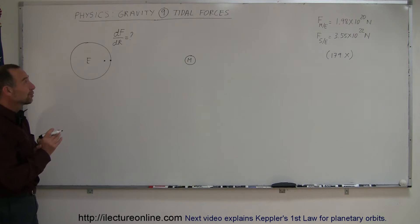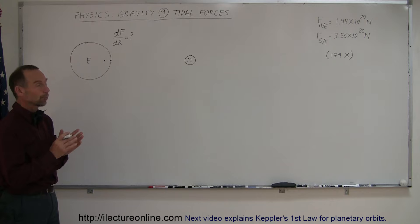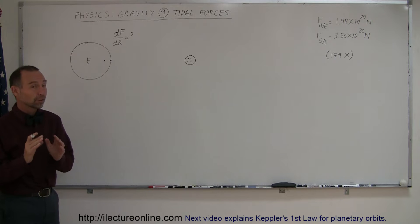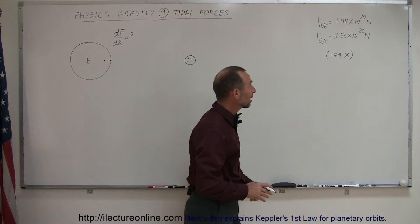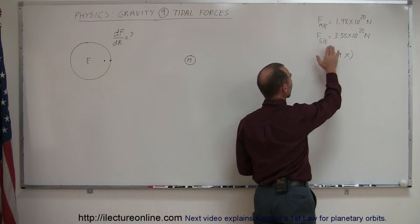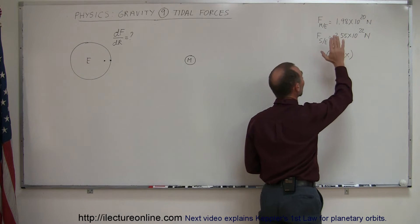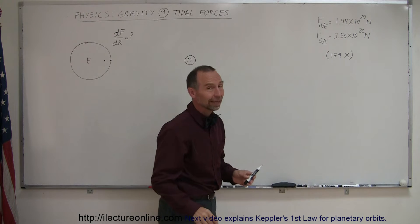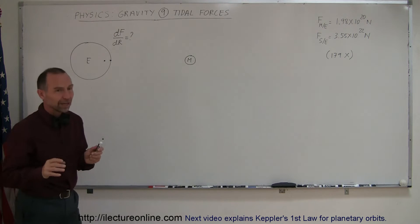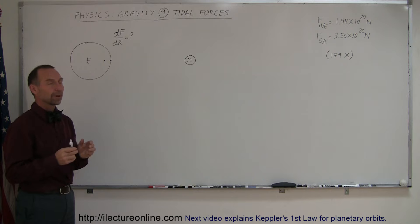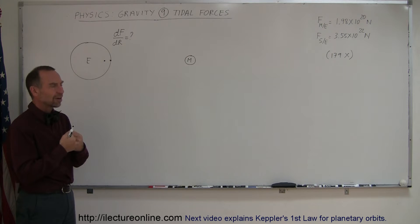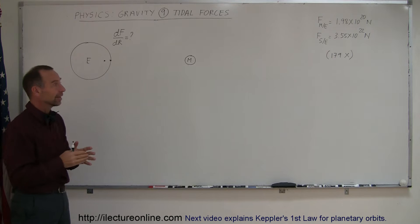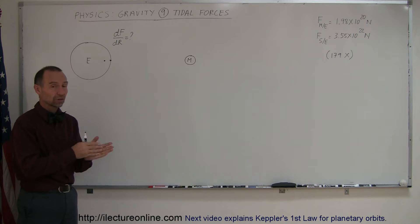In an earlier video, you may remember that we calculated the force between the Moon and the Earth and the force between the Sun and the Earth, and here I have those numbers up here. You can see that the force between the Sun and the Earth was 179 times the force between the Moon and the Earth, and yet the tidal forces are primarily caused by the Moon rather than by the Sun, even though the force of attraction between the Moon and the Earth is far less than the force of attraction between the Sun and the Earth.